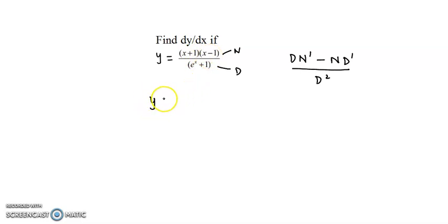This term is simplified. Therefore, y becomes (x²-1) divided by e^(x+1). The denominator remains as it is.